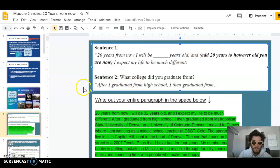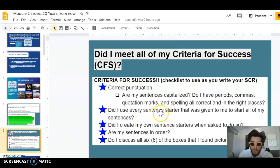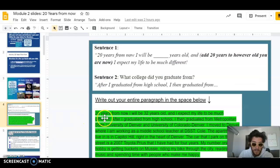Sentence 2: I have my sentence starter 'after I graduated from high school, I then graduated from.' I included that in my typed out paragraph. That's part of our check for understanding—did I use every sentence starter that was given to me? Yes. After I graduated from high school, I then graduated from Metropolitan State University of Denver and University of Colorado Denver.